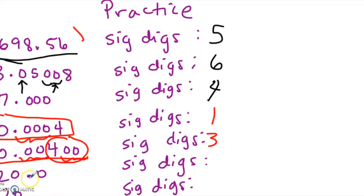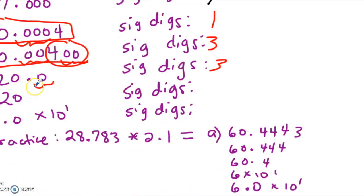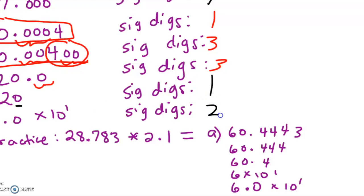For 20.0, the zero trailing the decimal is significant, giving 3 significant digits. Why write that zero if it were not significant? The person wrote it because it is a significant digit. What about just 20? You can't be sure, so you can assume it only has one significant digit. If you wanted to be sure, write it in scientific notation as 2.0 × 10¹ — then you know it has two significant digits. Without scientific notation, you cannot be sure whether the zero is significant or not.